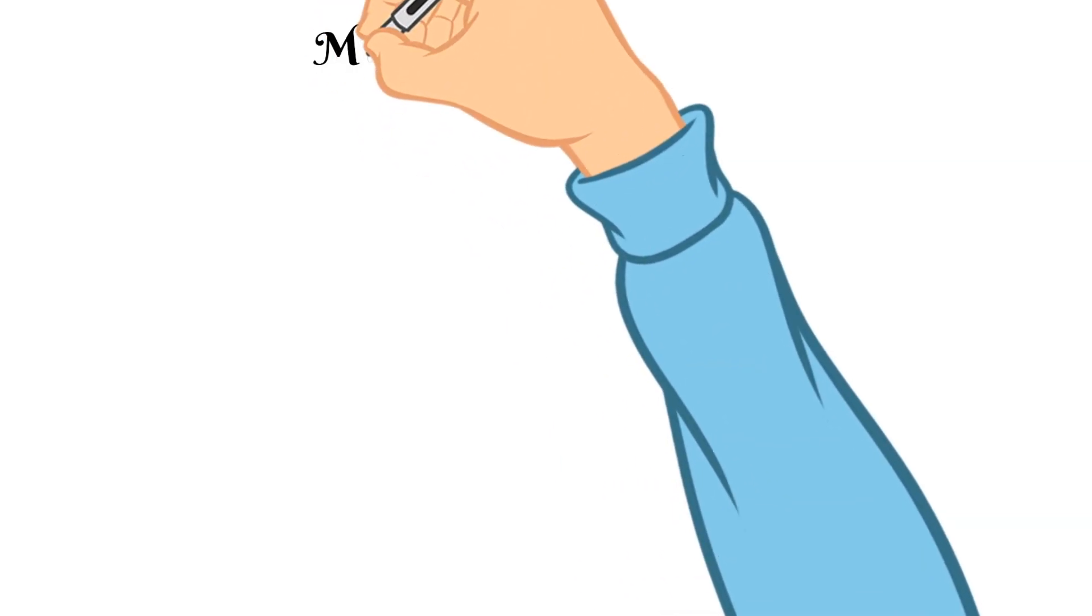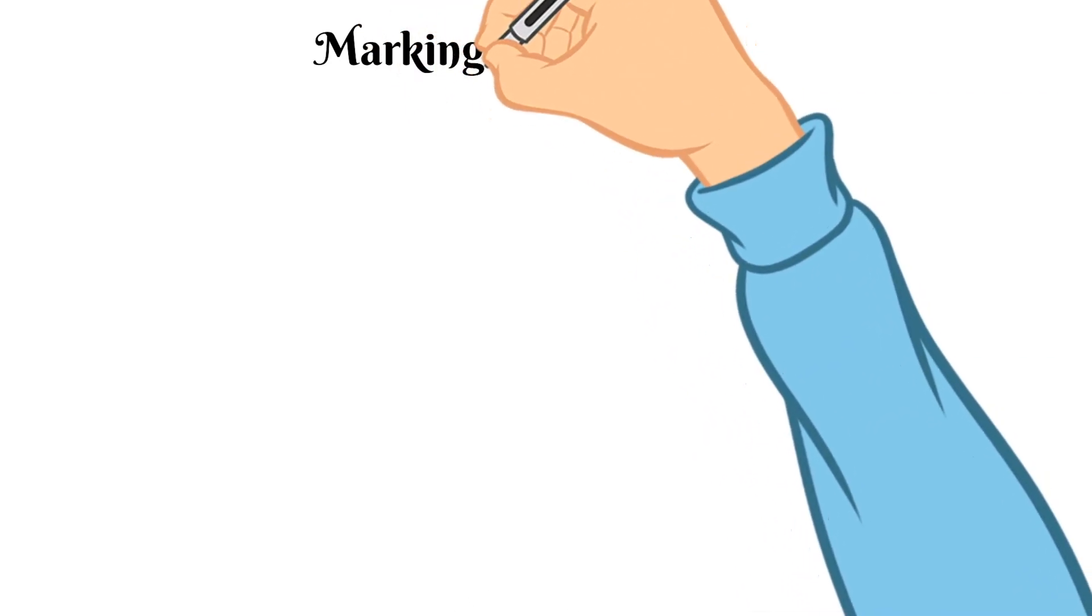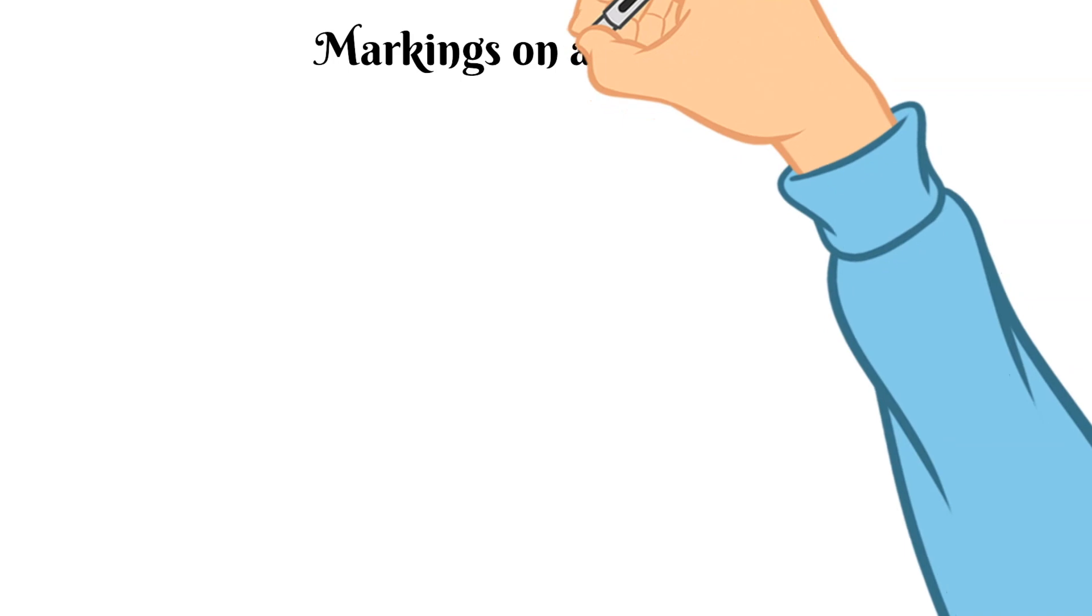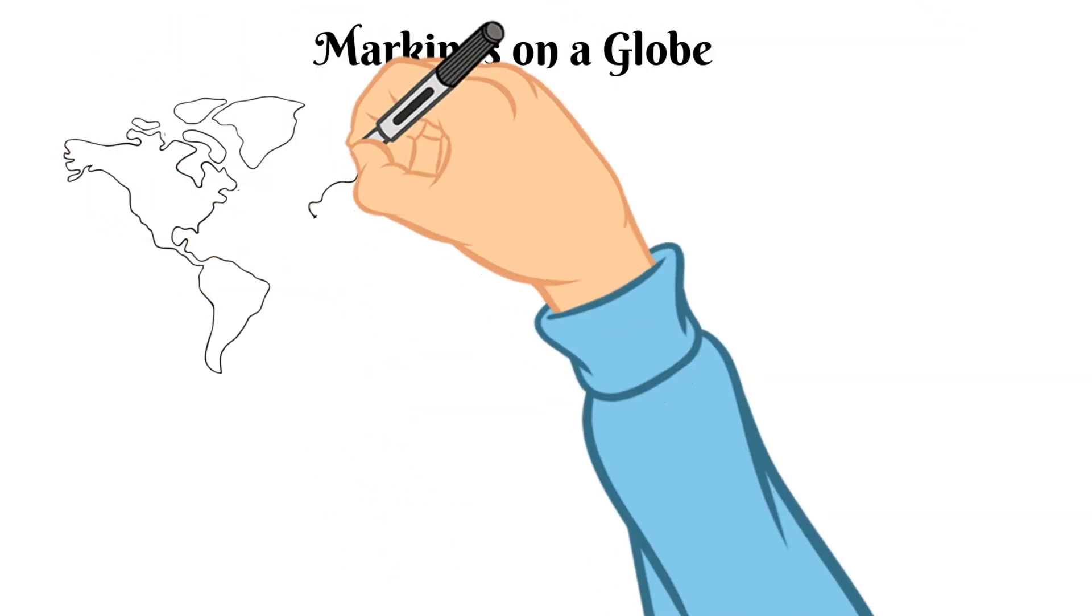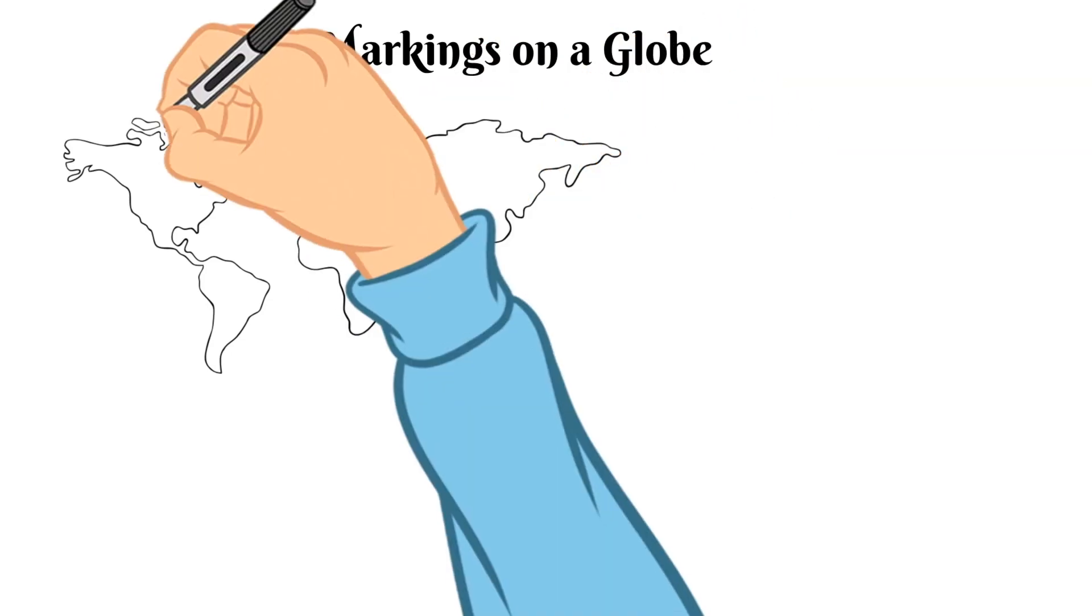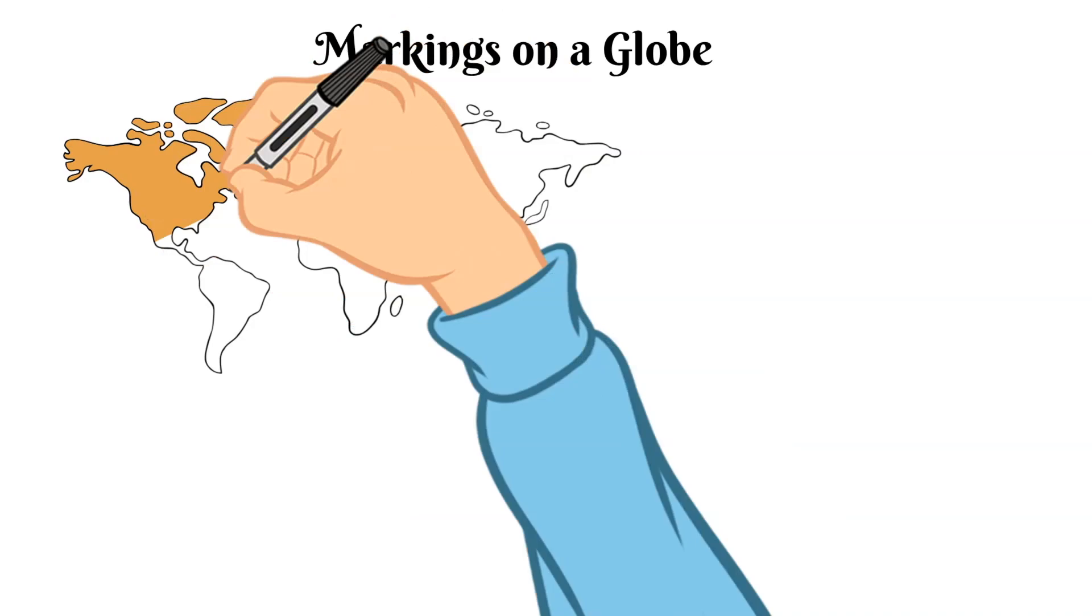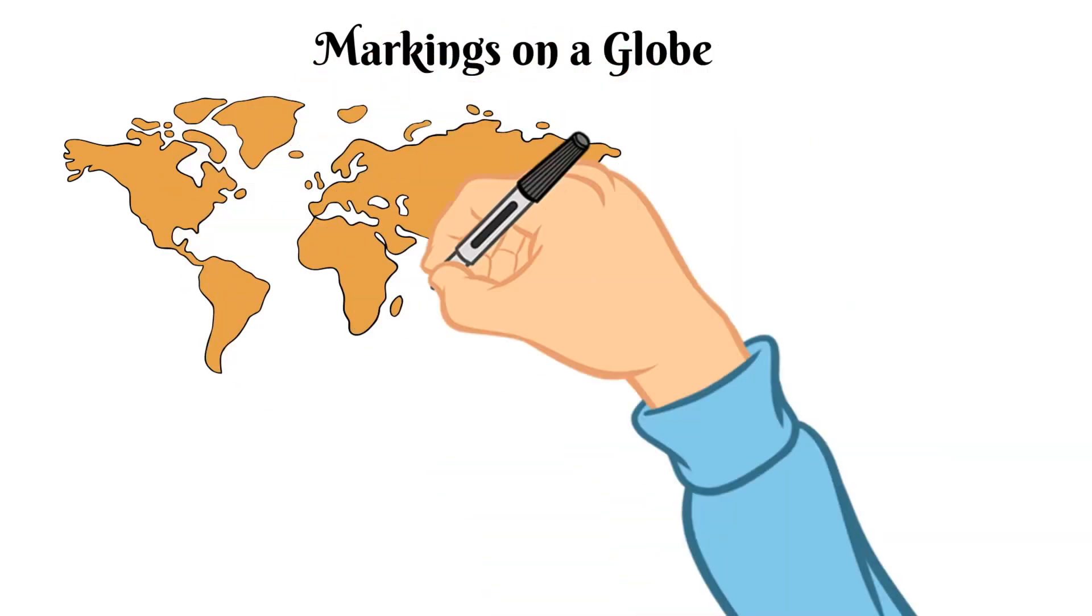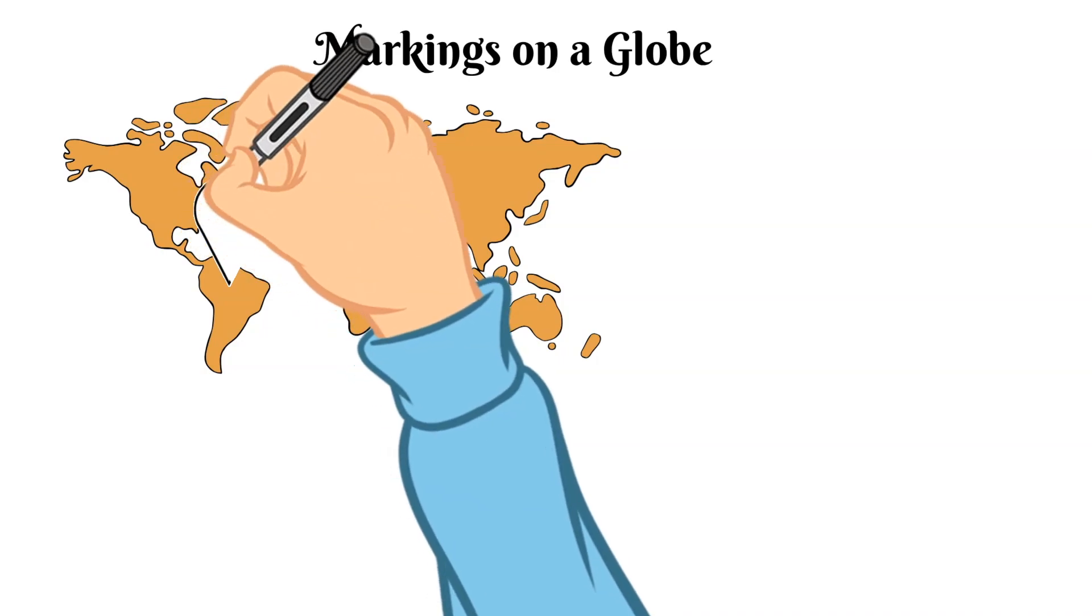Today we are going to be talking about some markings on the globe and why they're important to know. So previously we've talked a little bit about maps and some of the characteristics of a map. A map is a drawing of all or part of the earth's surface and its basic purpose is to show where things are.